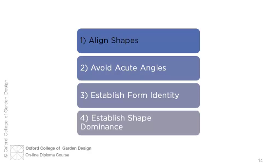Thirdly, you need to establish form identity. Make sure you don't lose that interlocking pattern when you come to build the garden properly. And finally, establish shape dominance. Don't use too many different shapes within the design, and have one dominant shape that becomes the main focal point.